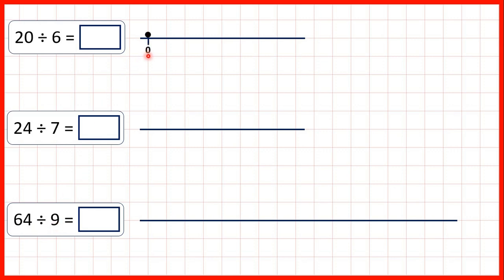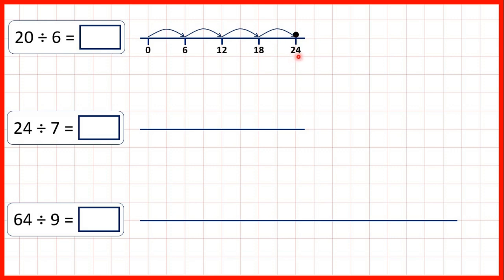So what we can do is count up in steps of 6 on a number line. So we have 6, 12, 18. And then if we made another jump of 6, we would get 24. But that's too many, because we're only dividing 20.